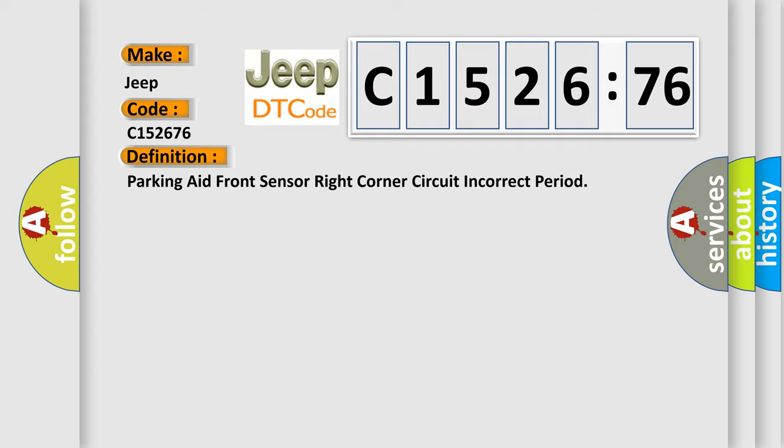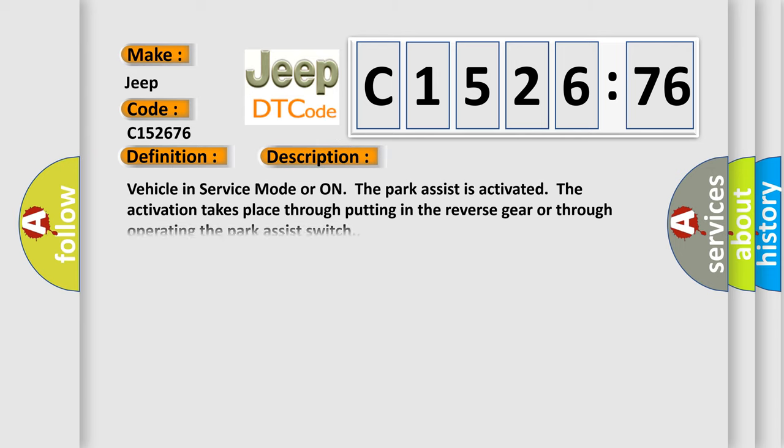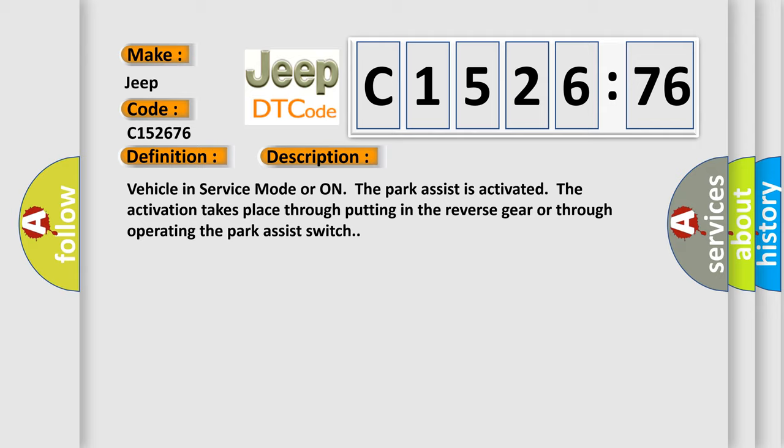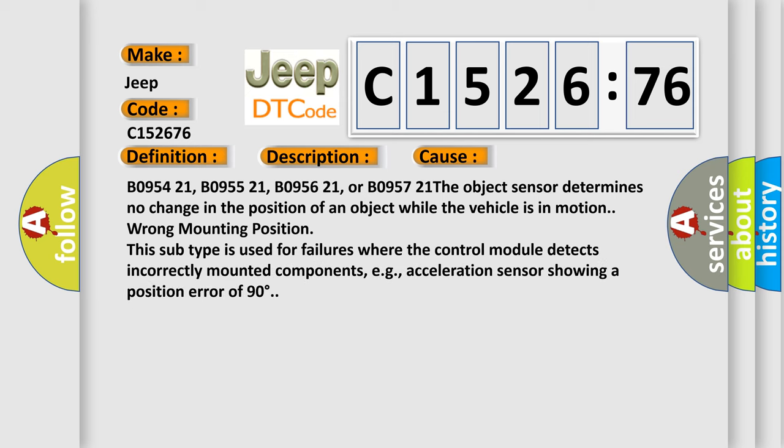The basic definition is: parking aid front sensor right corner circuit incorrect period. And now this is a short description of this DTC code. Vehicle in service mode or on, the park assist is activated. The activation takes place through putting in the reverse gear or through operating the park assist switch.